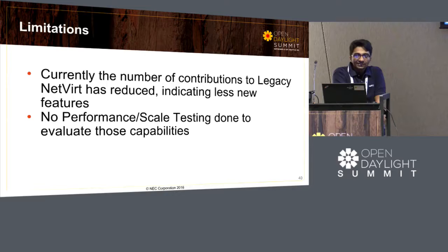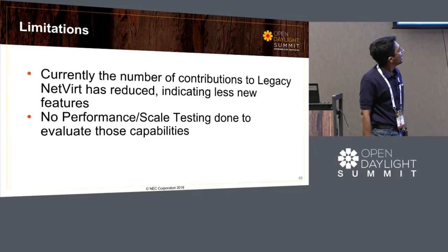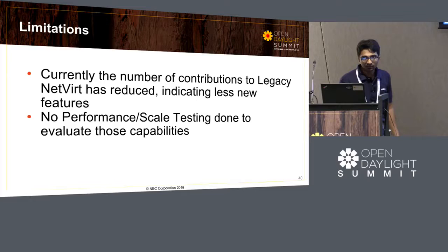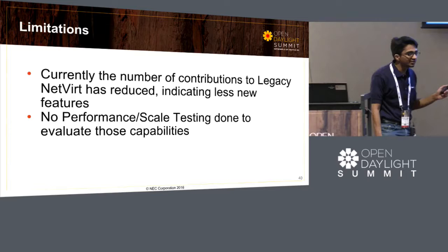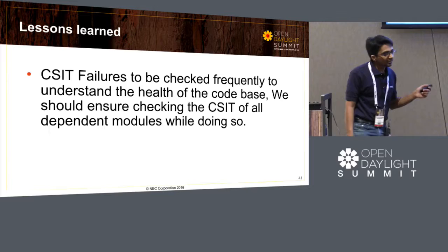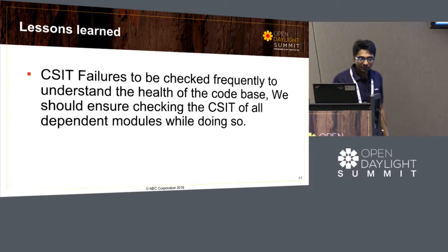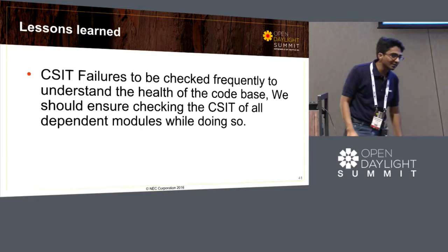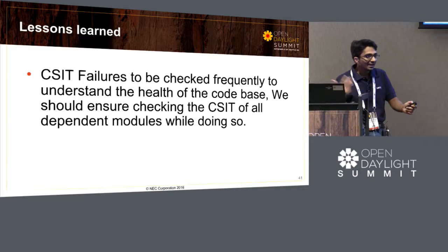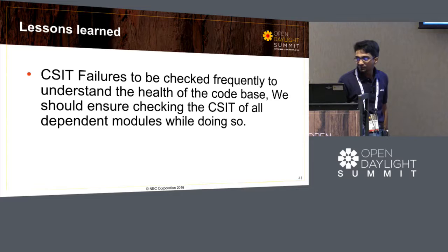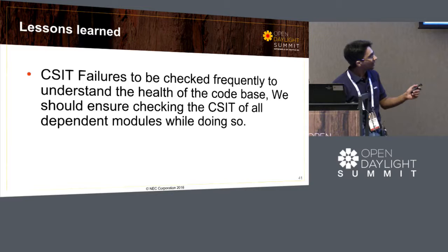Current limitations: with the legacy network approach, we are seeing fewer contributions as effort shifts to new network, so it is better to move sooner. Also, there are no performance or scalability tests currently available to evaluate whether the solution can scale. Such testing needs to be added. One key lesson: when checking CSIT job health, we were not checking the health of dependent projects like OVSDB or OpenFlow plugin. A failure in a dependent project job could affect us later. Our learning is to check all dependent project failures proactively.